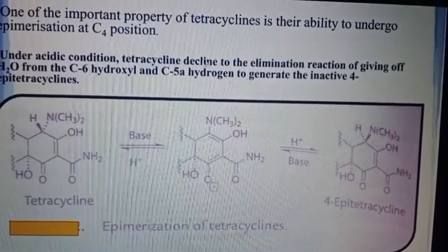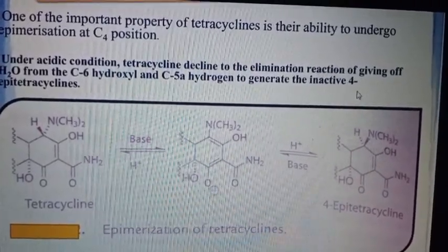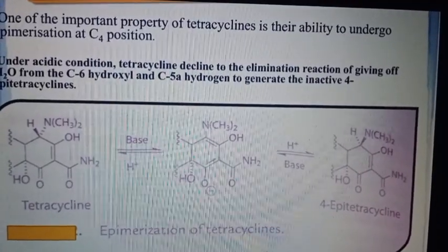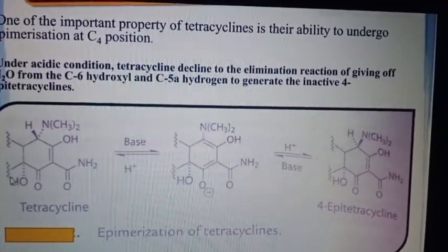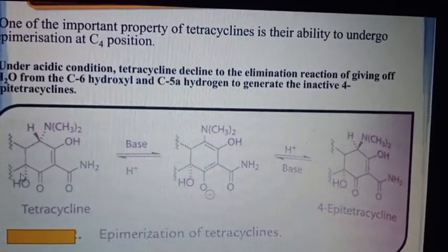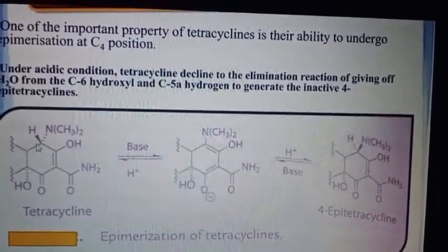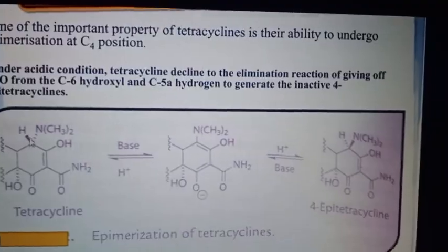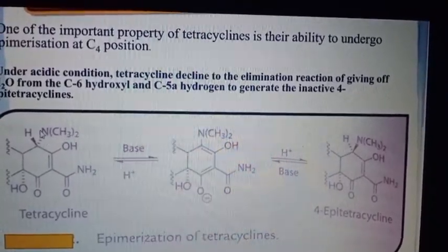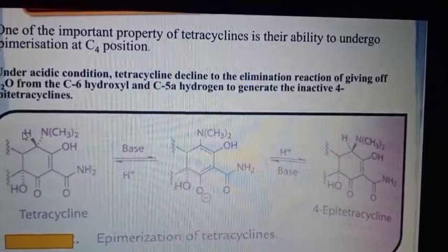This is epimerization at the 4th position. Looking at the structure, epimerization involves a dotted line representing the dimethylamine group and a dark (solid) line representing the hydrosine configuration.